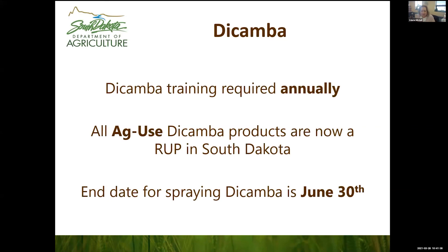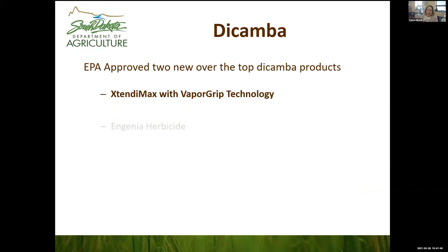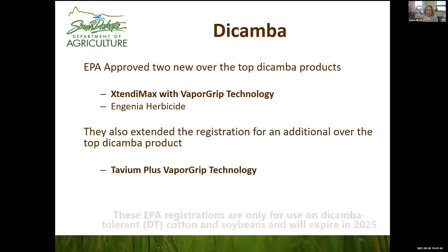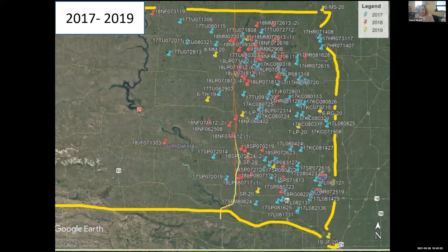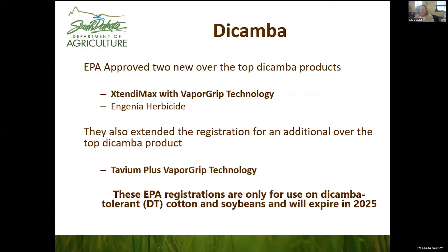The last date that you can apply those specific Dicamba products for soybeans is June 30th — that's the federal label and the state label. The three products specifically are Xtendimax, Engenia, and Tavium Plus. Currently these are only used on cotton and soybeans and they are set to expire in 2025. In South Dakota, all Ag Dicamba products — not lawn products, but Ag products — are a restricted use pesticide, which means you have to have a private applicator license or commercial applicator license to purchase and apply them.